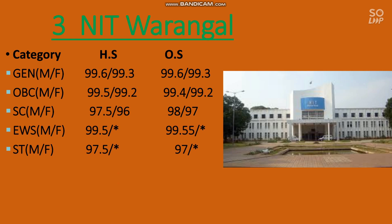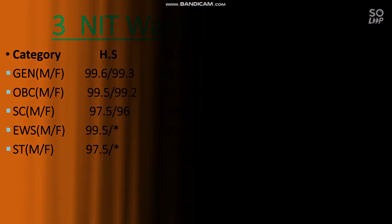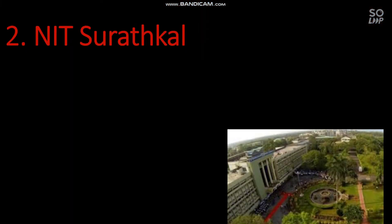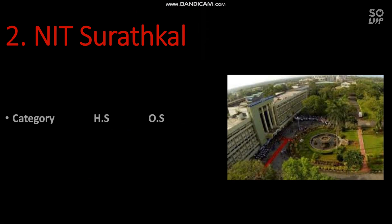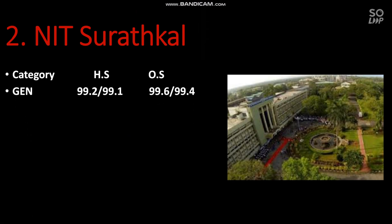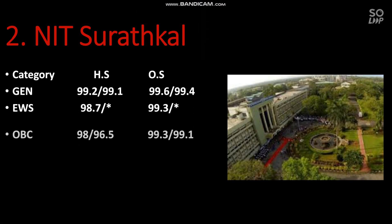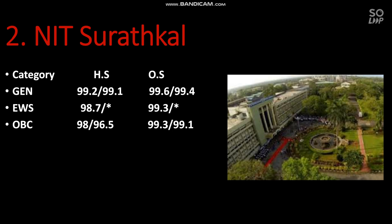Wherever you find a star mark, that means that category is not reserved for the EC branch in that particular NIT. The next one is NIT Surathkal at number 2. The cutoff is: General — 99.6 percentile, EWS — 99.3, OBC — 99.3, SC — 98, and ST — 97 percentile required.